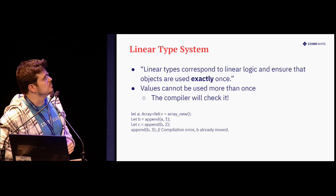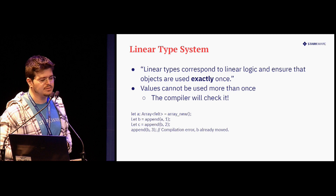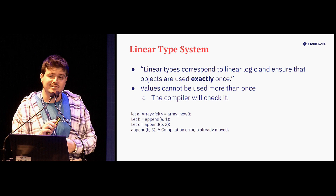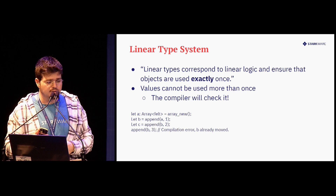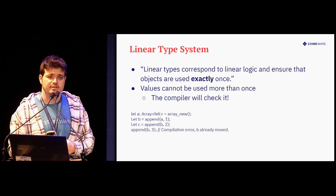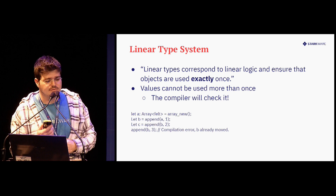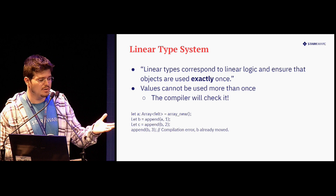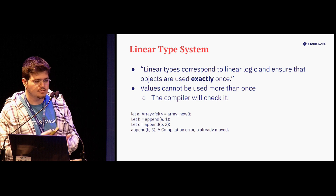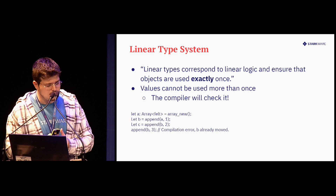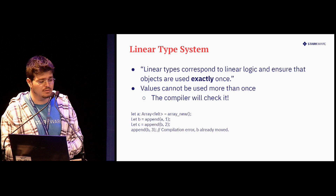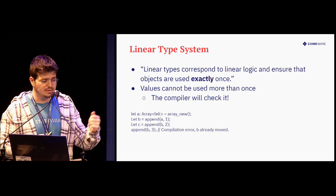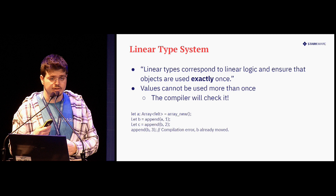A definition from Wikipedia: linear types correspond to linear logic, and they ensure that objects are used exactly once. That means if we implement a linear type system in Sierra, values can't be used more than once — the compiler will check it. How does this example look in Sierra? First, we define a new array. Then if we call append on this instance, we get a new instance B. Append again, we get new instance C.